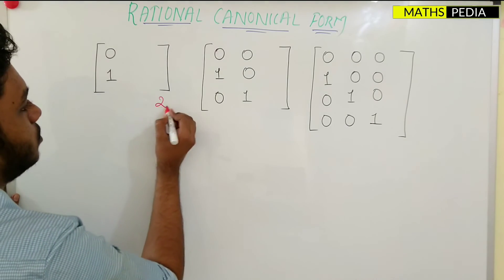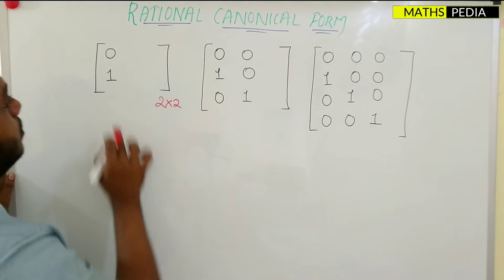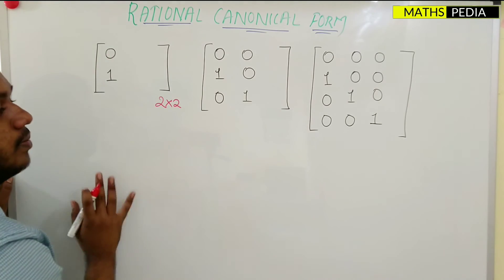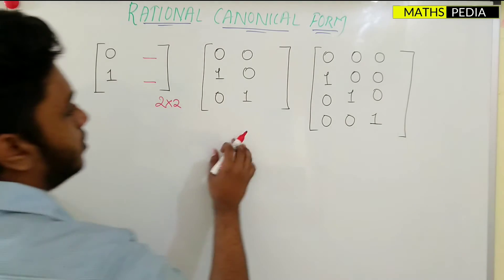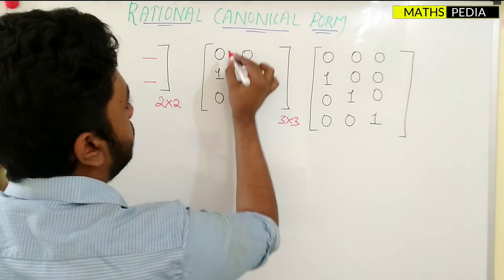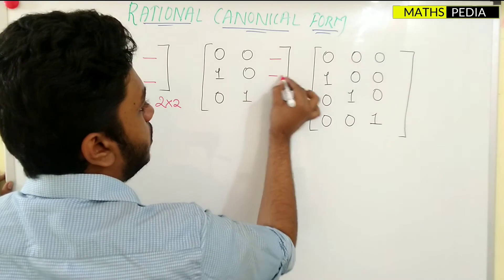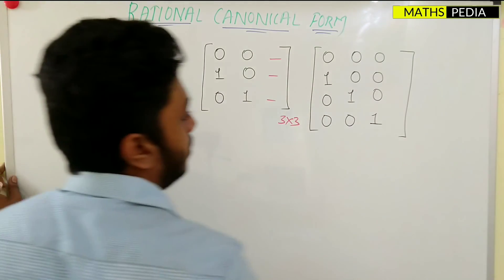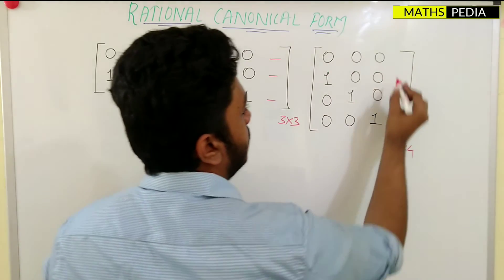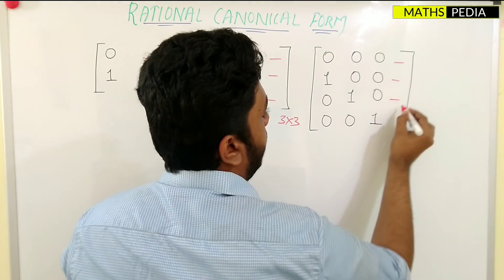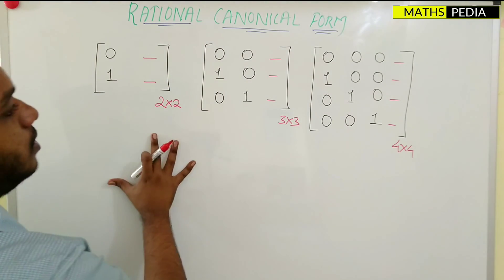Let us summarize. For the 2×2 rational canonical form matrix, the first column [0,1] is always fixed and you find the second column from the characteristic equation. For the 3×3 matrix, the first two columns are fixed and you find the last column elements. For the 4×4 matrix, the first three columns are fixed and you find the elements of the last column by looking at the characteristic equation.